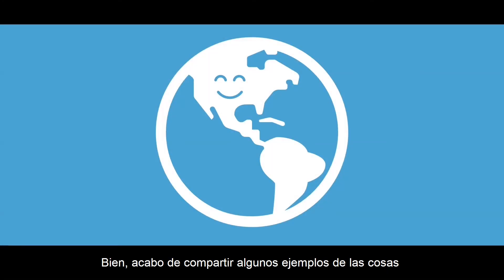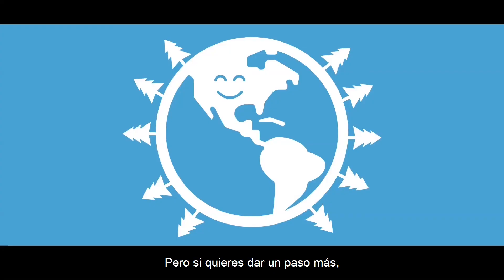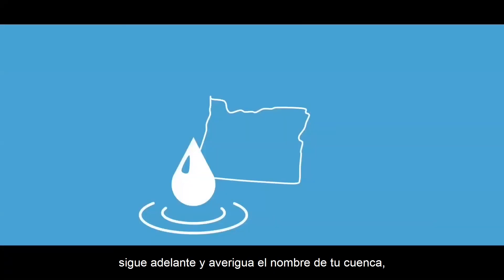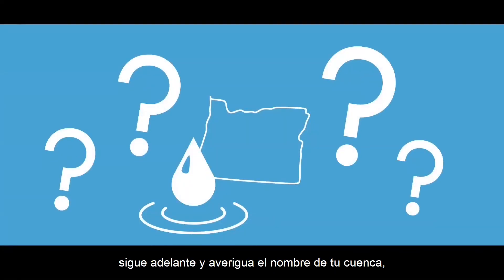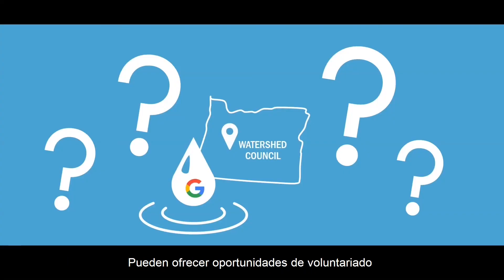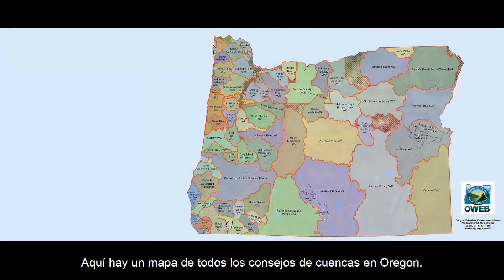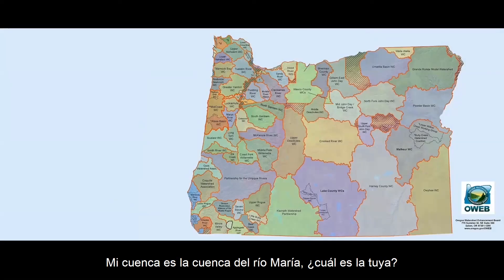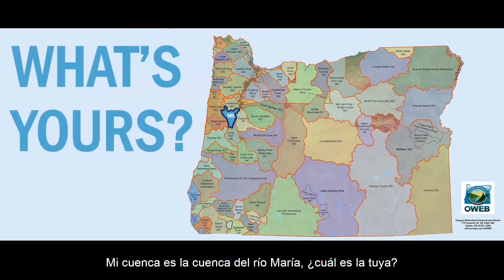I just shared some examples of the things you can easily do to keep your watershed healthy. But if you want to take a step further, go ahead and find out the name of your watershed. Google it and see if there is a watershed council in your community. They may offer volunteering opportunities at some of their restoration projects. Here is a map of all the watershed councils in Oregon. My watershed is the Mary's River watershed. What's yours?